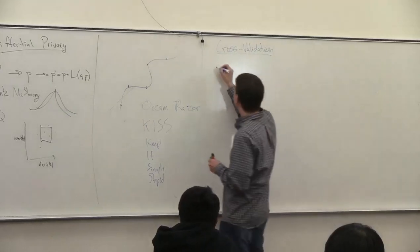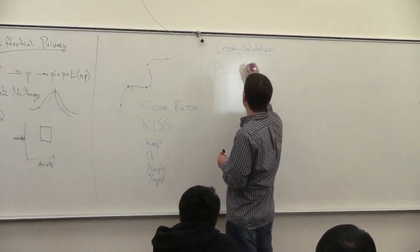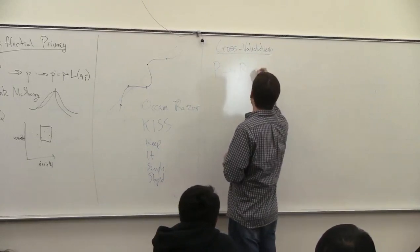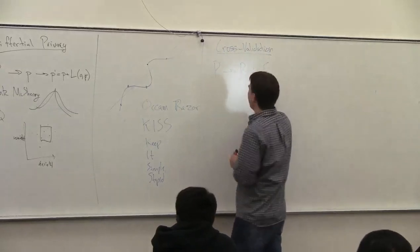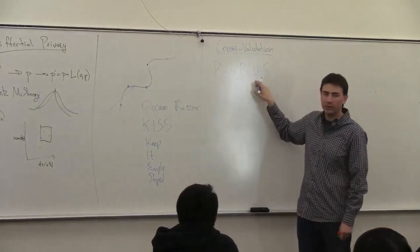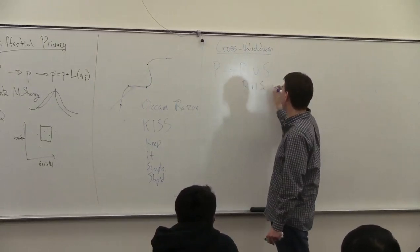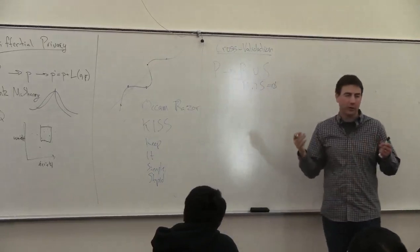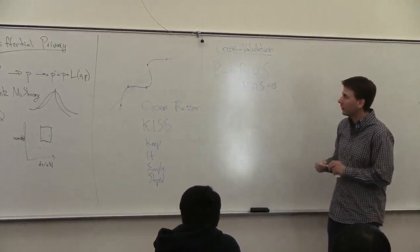What you do is take your data set and break it into two parts — R and S — where your data set is the union of these two, and R intersect S is empty, as noted. So these are disjoint. You have two separate parts of your data set.